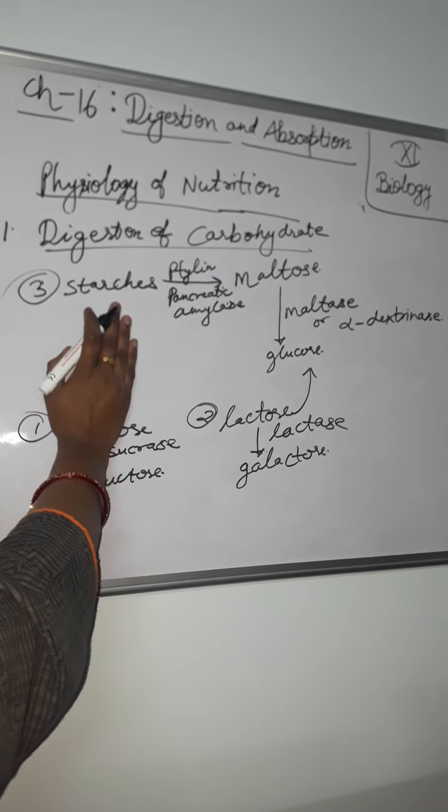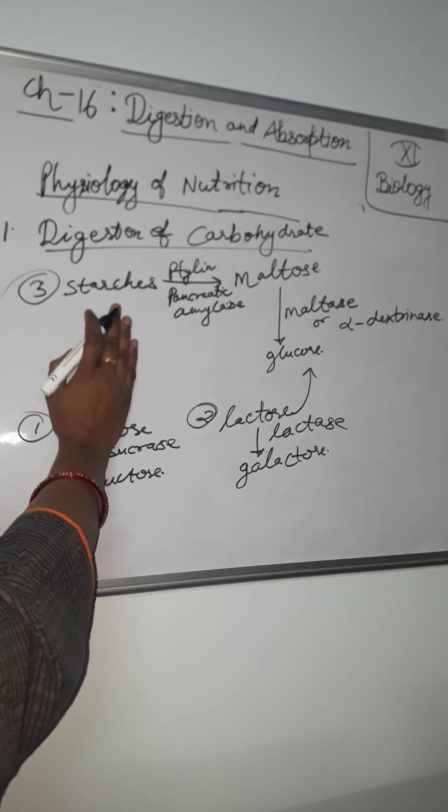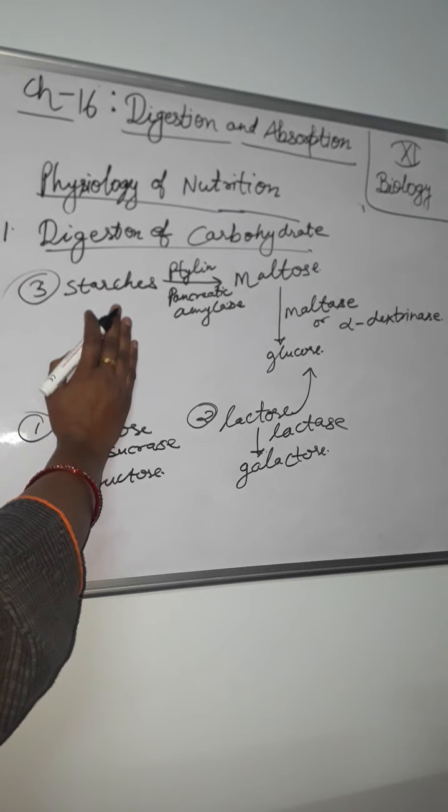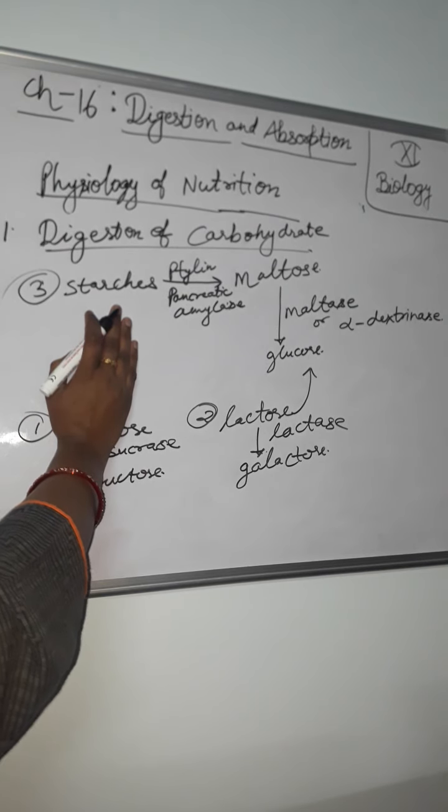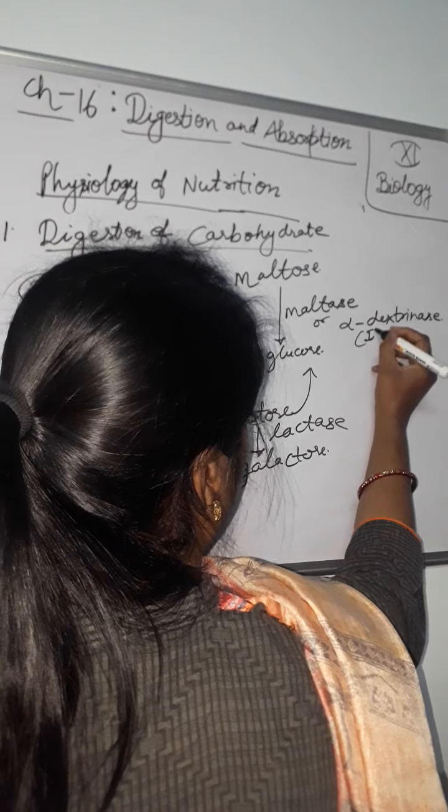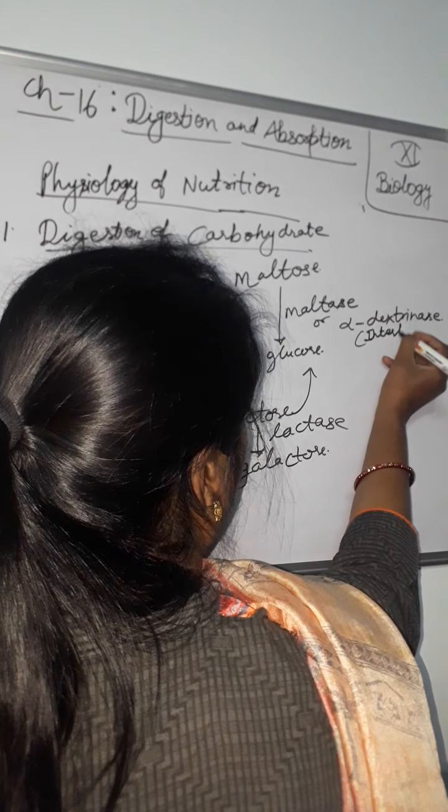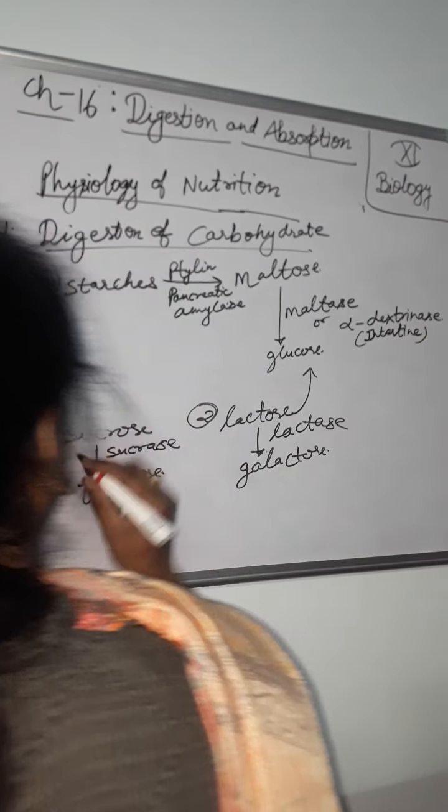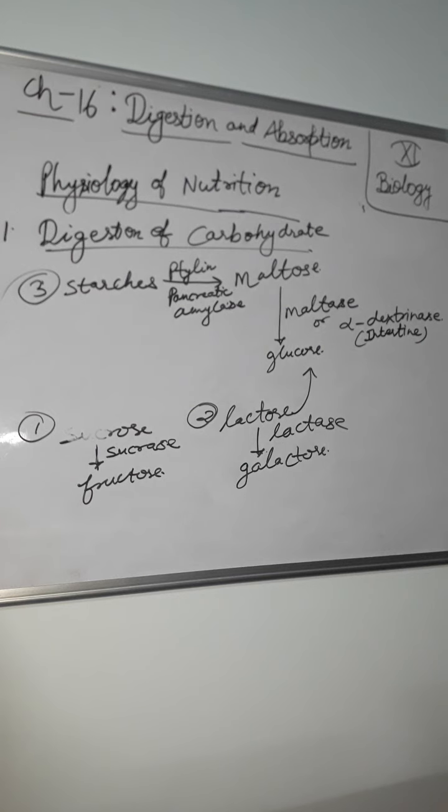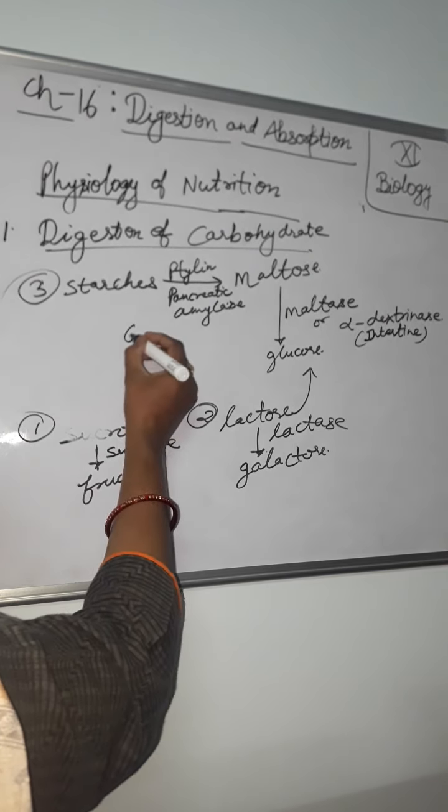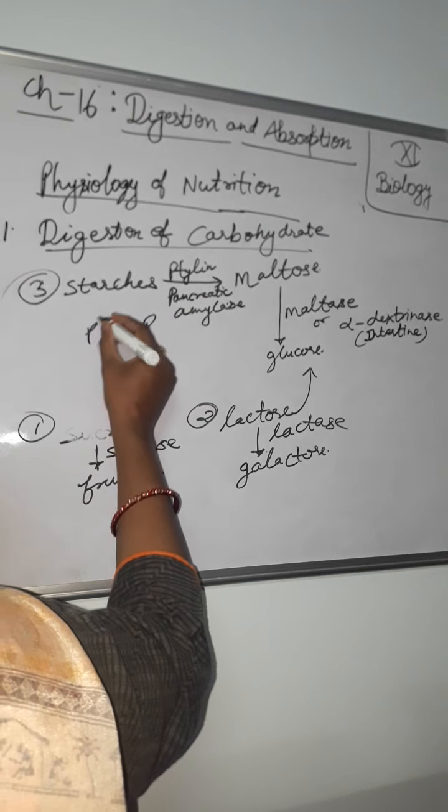Starch - what happens in the buccal cavity? Converted into maltose and alpha dextrin in intestine. Now it converts into glucose. Now again, the enzyme ptyalin hydrolyzes starch into dextrin and finally into maltose. The salivary amylase is most effective at pH 6.8.